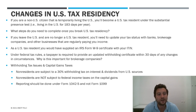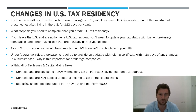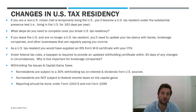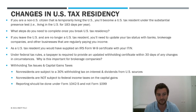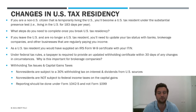Under federal tax rules, a taxpayer is required to provide updated withholding certificates within 30 days of a change in circumstance. If you read the fine print of your Form W-9 or your Form W-8 BEN, it says very clearly that you're signing this under penalty of perjury, that everything is accurate, and in the event that something changes — if a material part of that form changes — you need to provide an updated certificate. If you provide a broker a W-9 and you're no longer a U.S. tax resident, within 30 days you need to provide them a Form W-8 BEN, because now you're a foreign person for federal tax purposes.